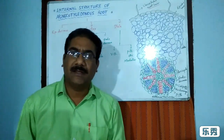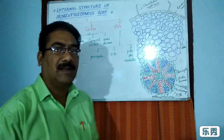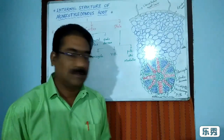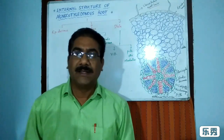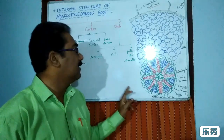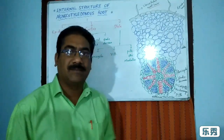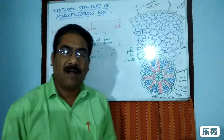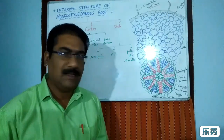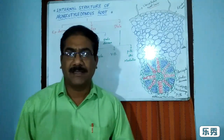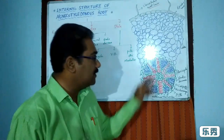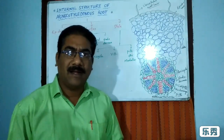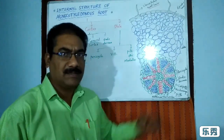The endodermis is the innermost layer of the cortex. It consists of a single layer of barrel-shaped cells arranged in a uniseriate manner. The endodermal cells contain deposits of suberin and lignin, forming thickenings called Casparian strips. Some cells, located towards the protoxylem, lack Casparian strips and are called passage cells. Passage cells are useful for the conduction of water and salts from the cortex to the stele.